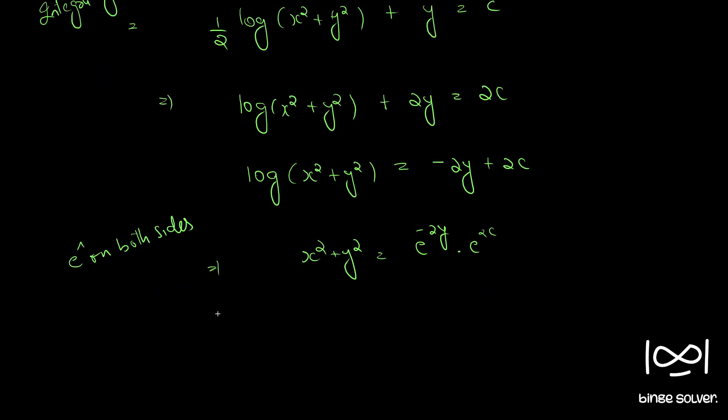Or, we can write x square plus y square equal to e raise to minus 2y into a constant c1, where c1 is an arbitrary constant and c1 is equal to e raise to 2c. So, this is the solution given.